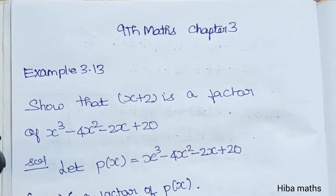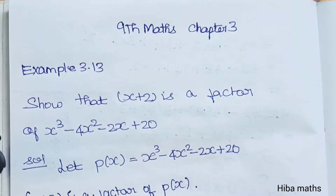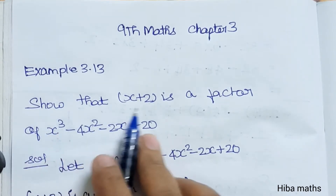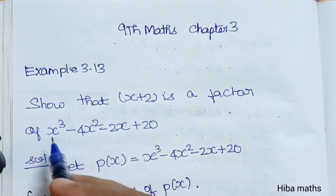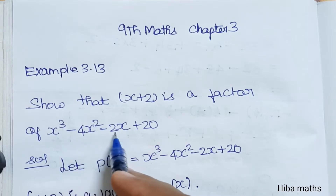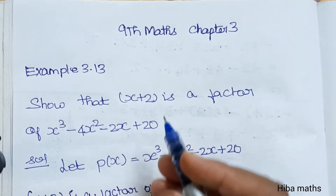Hello students, welcome to Hibamax 9, Standard Max Chapter 3, Example 3.13: show that x plus 2 is a factor of x cube minus 4x square minus 2x plus 20.